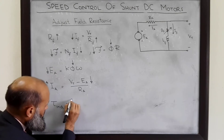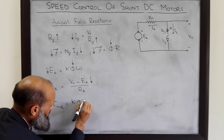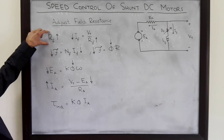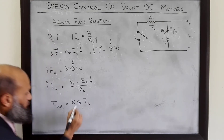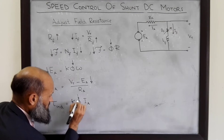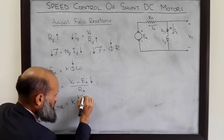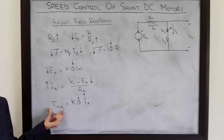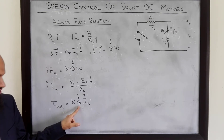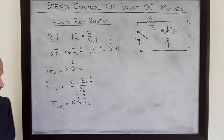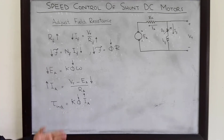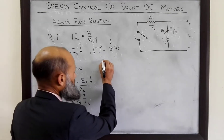The induced torque is given by K·φ·IA. So by increasing the field resistor, flux decreases and armature current increases. What is the net effect on induced torque? One quantity is decreasing and the other is increasing. To elaborate this net effect, let's take some numerical values.